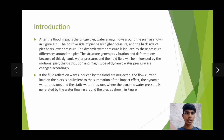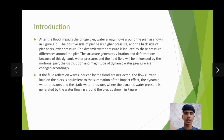The structure generates vibration and deformation because of this dynamic water pressure, and the fluid field will be influenced by the moving pier. The distribution and magnitude of dynamic water pressure change accordingly. If the fluid reflection wave induced by the fluid is neglected, the flow current load on the pier is equivalent to the summation of the impact effect, the dynamic water pressure, and the static water pressure, where dynamic water pressure is generated by the water flowing around the pier, as shown in the figure.